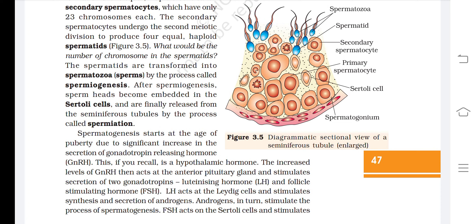Spermatogenesis starts at puberty due to a significant increase in the secretion of gonadotrophin-releasing hormone (GnRH), a hypothalamic hormone. Increased GnRH acts at the anterior pituitary gland and stimulates secretion of two gonadotrophins: LH and FSH. LH acts at the Leydig cells and stimulates synthesis and secretion of androgens, which in turn stimulate spermatogenesis.